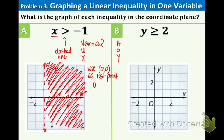We're using (0,0) as a test point. Just plug in the 0 for the X. Is 0 greater than negative 1? Yes it is. So that means we're going to shade on the side that contains (0,0). As you can see, (0,0) is the origin and it is in the shaded area. So that completes part A.